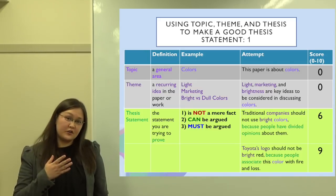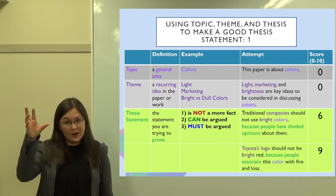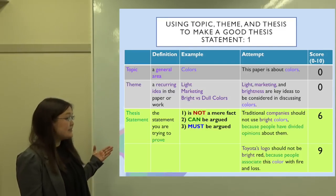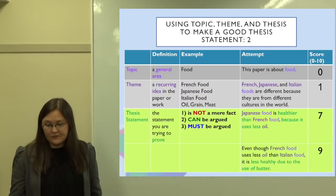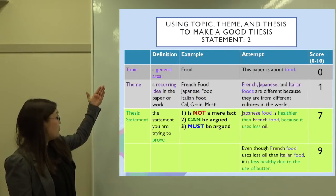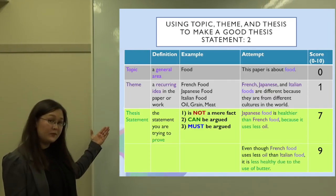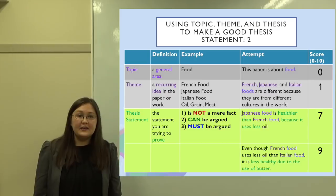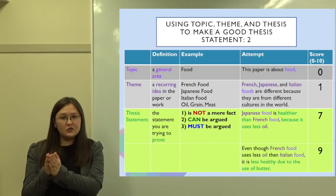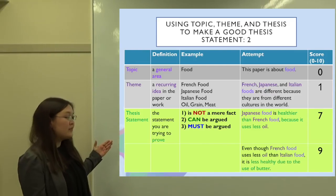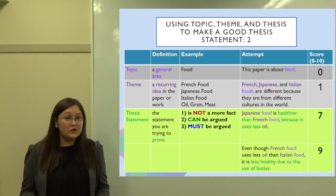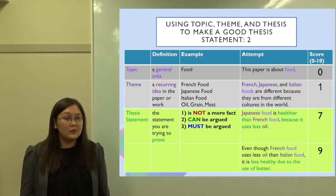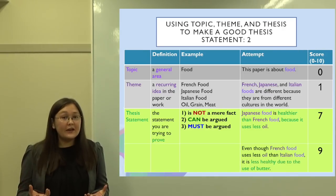Maybe you remember this chart from a previous flip. It showed the difference between a topic, a theme, and a thesis statement — one with a rating of six and a better thesis statement with a rating of nine. You also saw a second chart with the same topic versus theme versus thesis statement: one thesis statement rated seven and a better one rated nine. What we're doing today is going from your very narrowed theme into a thesis statement, and we want that thesis statement to get the highest score rather than settling for a six or seven.